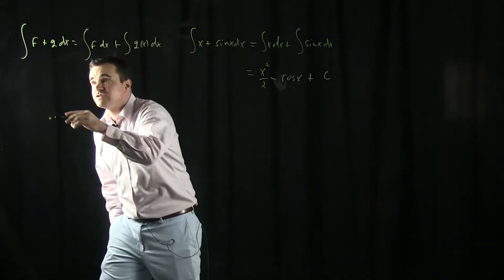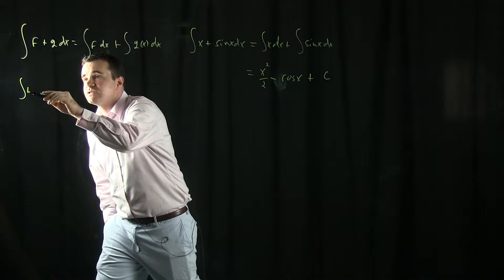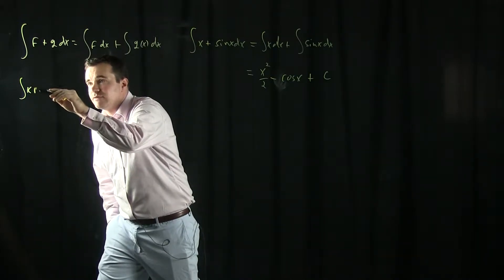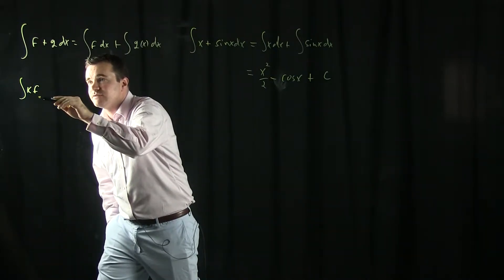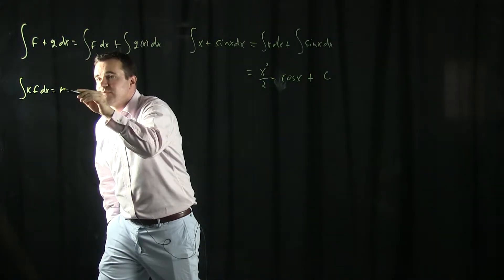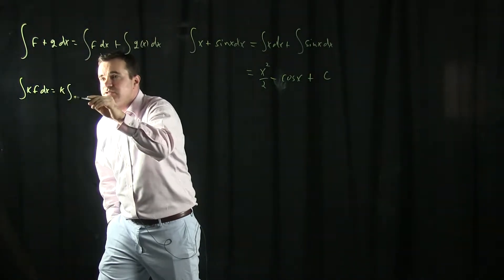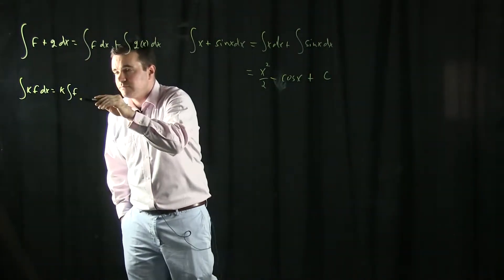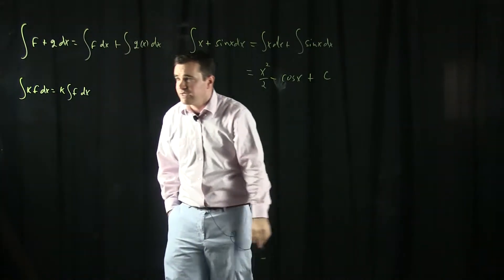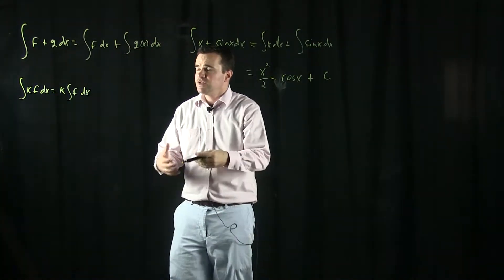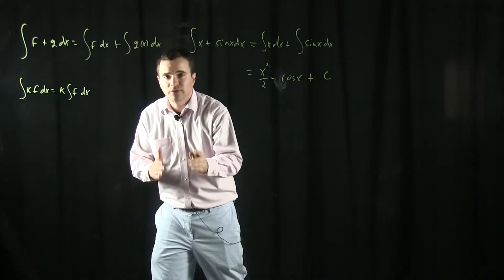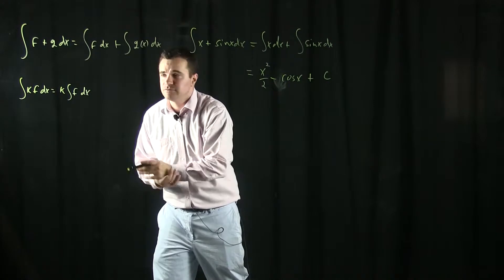I'll also show you this other linearity property, which says that if you take the anti-derivative of a constant times a function, that's the same thing as the constant times the anti-derivative of the function. The reason this is true boils down to the fact that you can pull a constant out of a derivative.